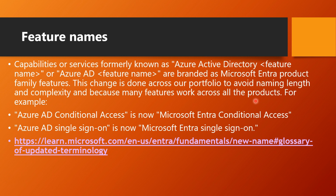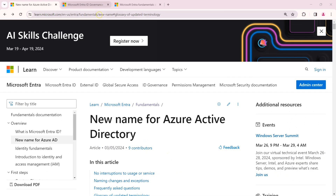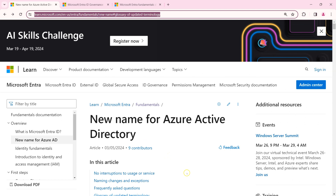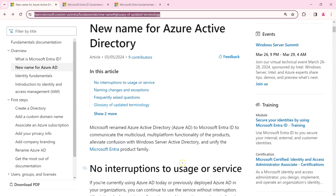Since the name change, some capability names have also changed. For example, Azure AD Conditional Access is now Entra Conditional Access. Similarly, Azure AD Single Sign-On is now called Microsoft Entra Single Sign-On. If you pull up the Microsoft page — which is available as a bookmark in this lecture's resources — you can see this documented clearly.